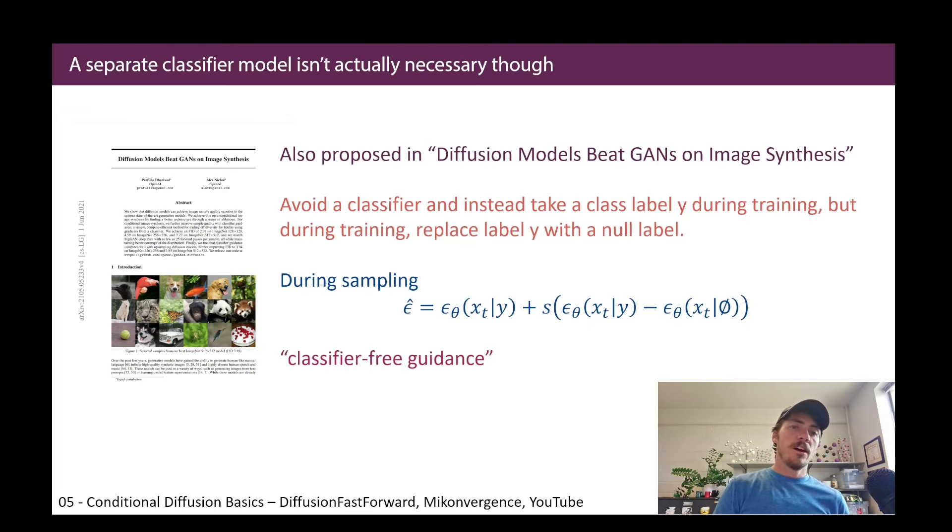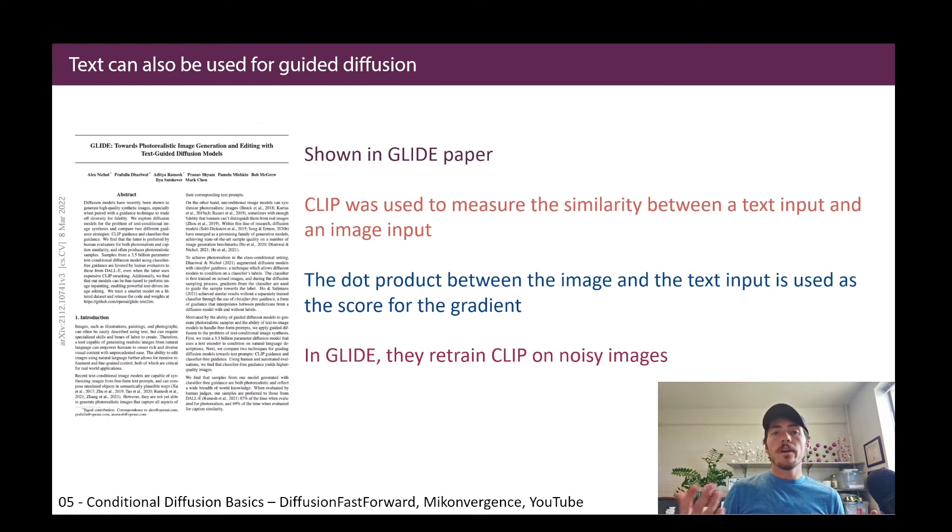What's kind of cool is that you didn't actually have to have a separate classifier model to do this. This was also proposed in that paper. They avoid training a separate classifier, and they instead, they take the class label Y during training, but during training, they replace that label Y with a null label. And then during sampling, they basically compare the performance of what it should be versus what it actually did with the null label. So this is called classifier-free guidance.